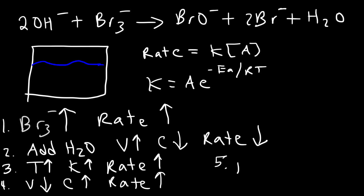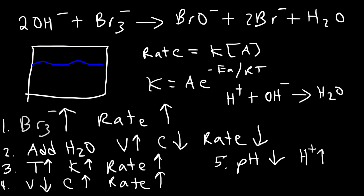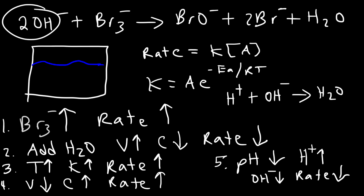Finally, what if we decrease the pH of the solution? If you decrease the pH, the solution is becoming more acidic, so you're increasing the H⁺ concentration. As you add acid to the solution, the acid will react with hydroxide to produce water. So adding H⁺ will decrease the concentration of hydroxide, which is one of the reactants. If you decrease the concentration of the reactants, the rate is going to decrease. So decreasing the pH makes it more acidic, lowers the hydroxide concentration, and that slows it down.